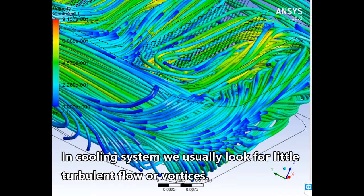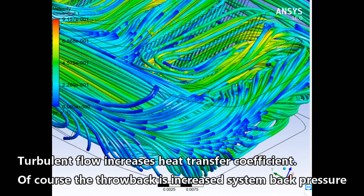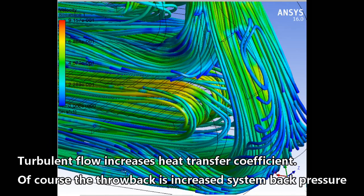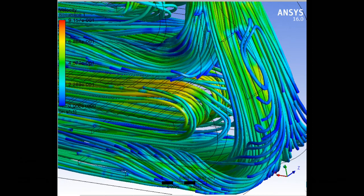In cooling systems, we usually look for a little turbulent flow or vortices. Turbulent flow increases heat transfer coefficient. Of course, the drawback is increased system back pressure because resistance is increased when the flow enters into a turbulent zone. But it is justified from a cooling point of view.